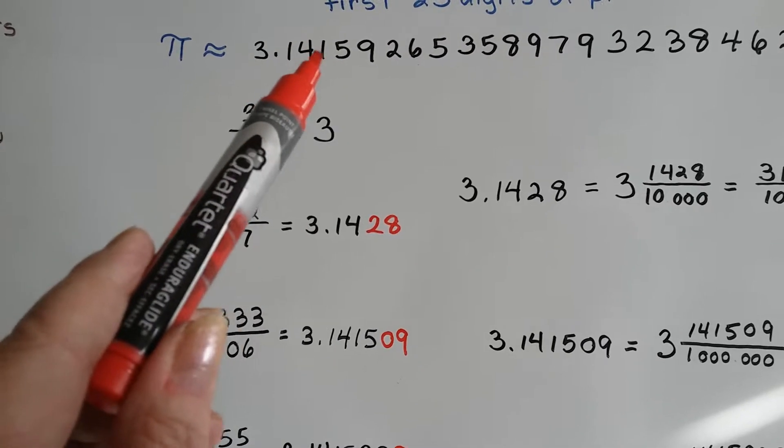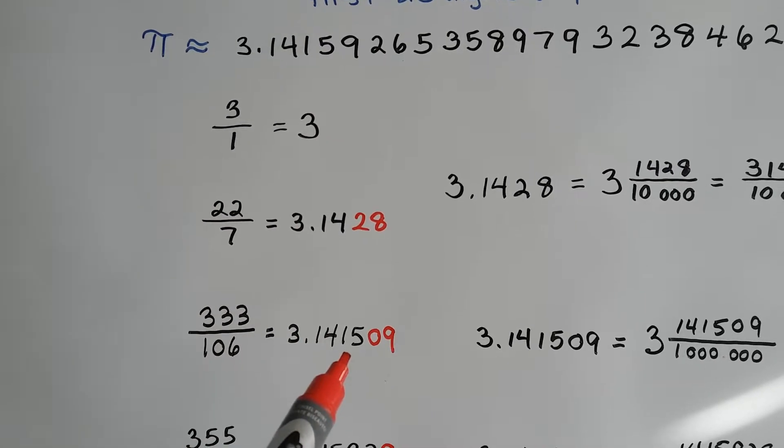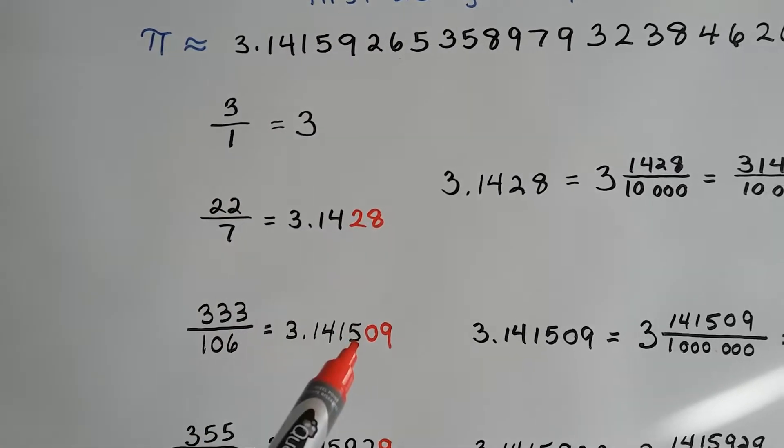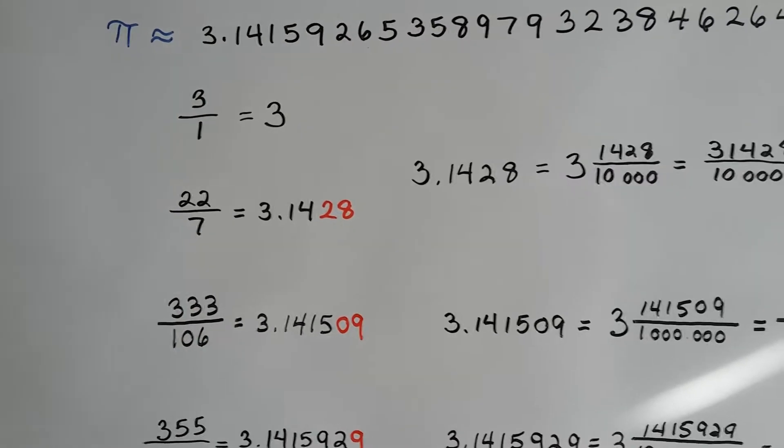It would go 1, 4, 1, 5, 9, 2. See, after the 5 comes a 9, 2. And, they're using a 09 to get to this fraction.